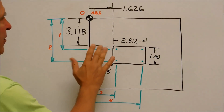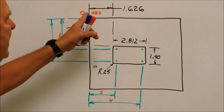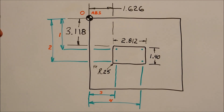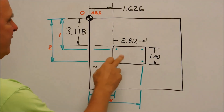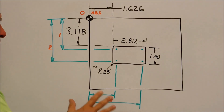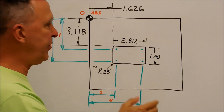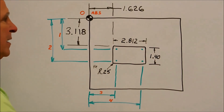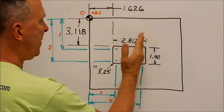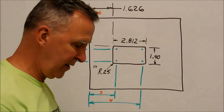In an absolute positioning mode, if you are picking up the back left corner of your part as your home position, you now have four spots that you need to find. You need to find the corners of this pocket based on the size of the cutter you're using and the dimensions given. In absolute, you have four different numbers — one, two, three, four — that you need to pay attention to.